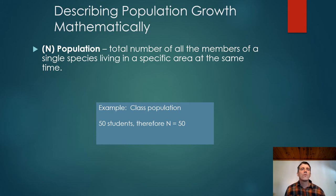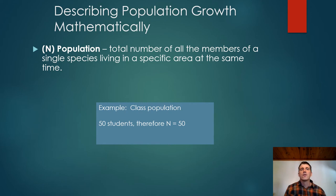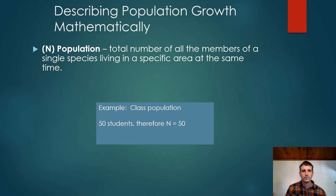We're going to start with terminology as it relates to the mathematical characterization of population ecology and population growth. The first term is population. A population is the total number of animals or members of a single species in a specific area at a specific time. For example, if we had a classroom of 50 students, the class population would be 50. We use the term N for population, so N equals 50. These notations — N, R, and T — become important as we develop mathematical equations to describe these processes.